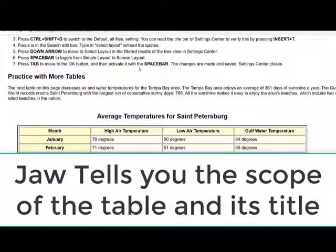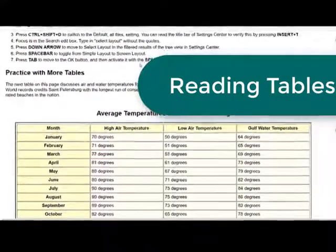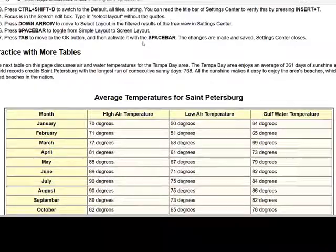The sample table has 4 columns and 13 rows, showing average temperatures for St. Petersburg. We're going to read in this table, and we're going to learn how we can read within the cells, and how we can read columns and rows.